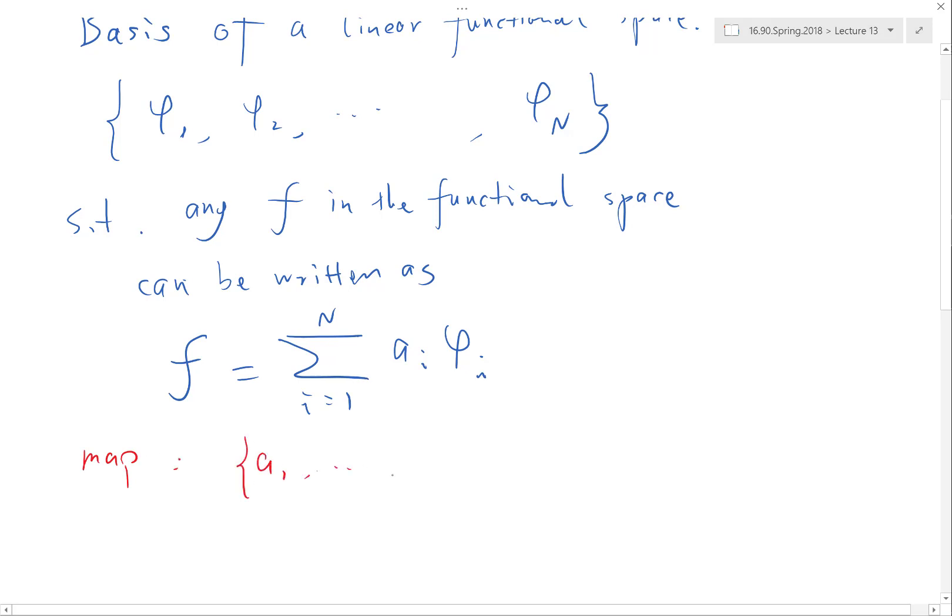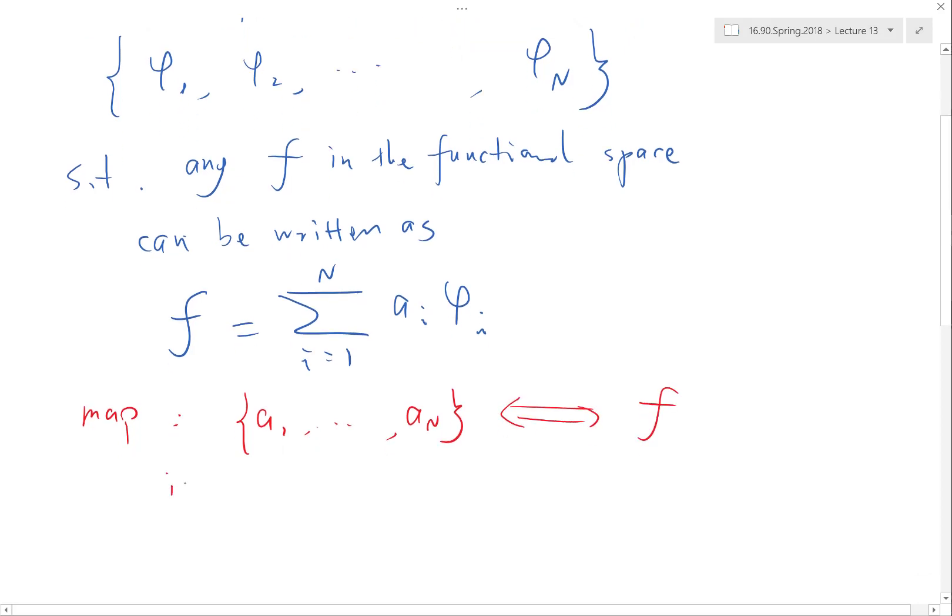So the map between a_1 to a_N as a vector to F is bidirectional, which means if you have an F, you can derive a unique set of linear combination coefficients as soon as you fix these phis. And if you have a set of a_I's, of course you automatically get an F by just evaluating that formula.